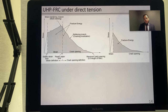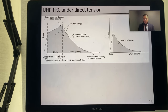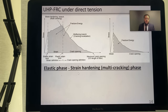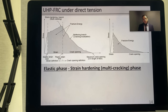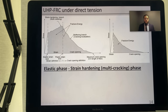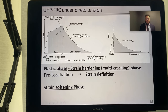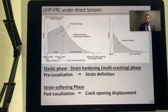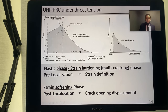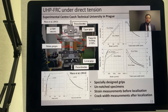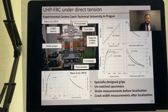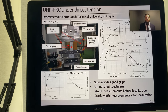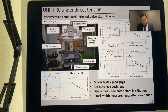Under direct tension, ultra-high-performance fiber-reinforced concrete exhibits behavior completely different from normal and high strength concrete. It has an elastic phase up to the elastic limit, then a strain-hardening multi-cracking phase up to crack localization, followed by a strain-softening phase. In the pre-localization phase, a strain definition is acceptable, but post-localization, crack opening displacement is more representative. This is why researchers present results in biphased form: strain for pre-localization and crack opening displacement for post-localization.